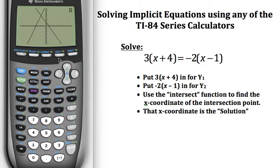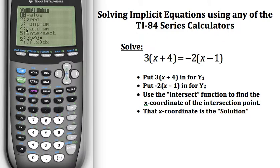I'm going to hit second, calc, and that is going to pull up a menu. And if I go down and look, number 5 is intersect. So I can either arrow down and select it, or I can hit 5.